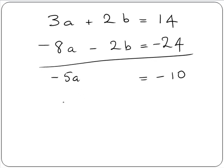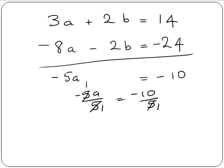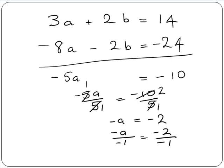We divide both sides by 5: minus 5a divided by 5 and minus 10 divided by 5. 5 into 10 goes twice, so we're left with minus a equals minus 2. Now we need to get plus a, so we divide both sides by minus 1: minus a divided by minus 1 and minus 2 divided by minus 1, giving us a equals 2.